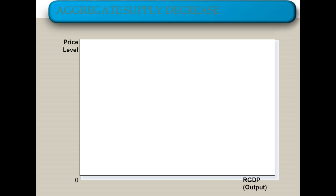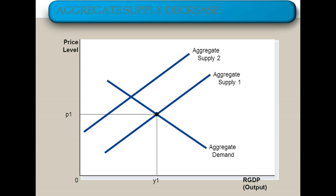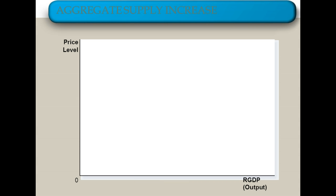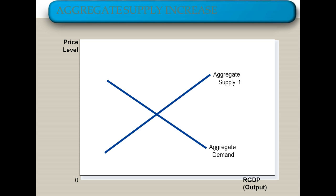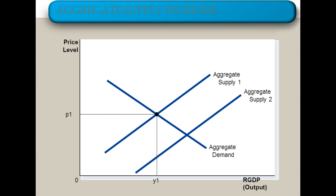Now let's bounce over to aggregate supply — a quick review from the previous module. A decrease in aggregate supply means an increase in price and a decrease in RGDP. An increase in aggregate supply means that price decreases while RGDP increases. But again, what causes that to happen?